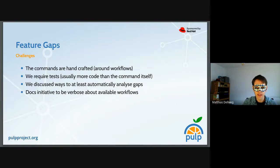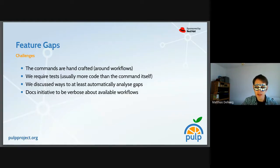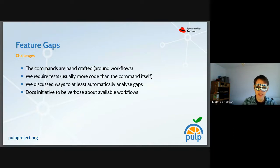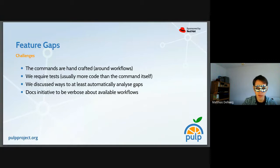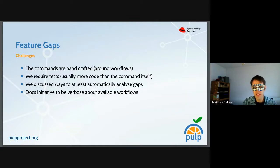On to the challenges we saw this year. I don't see a way to auto-generate anything useful, which means all commands are handcrafted and based around workflows. This naturally introduces feature gaps because PULP Core is evolving and the CLI might not be catching up. The CLI started late compared to PULP Core, so there's a long range it hasn't yet caught up with.